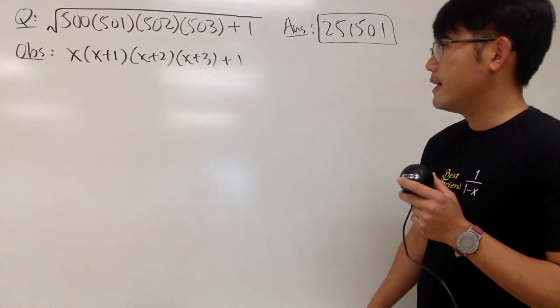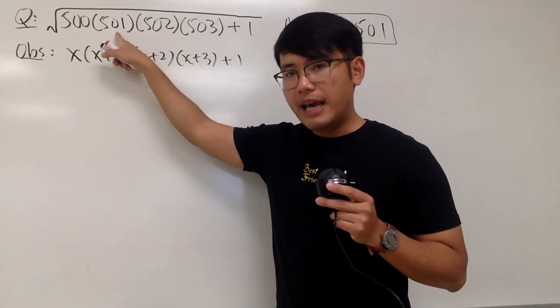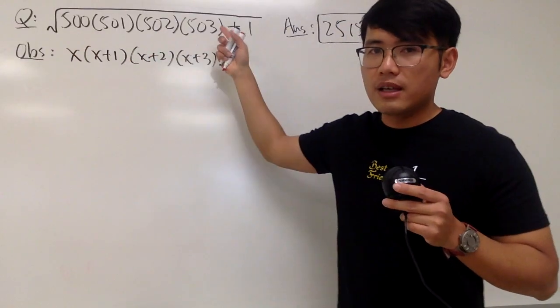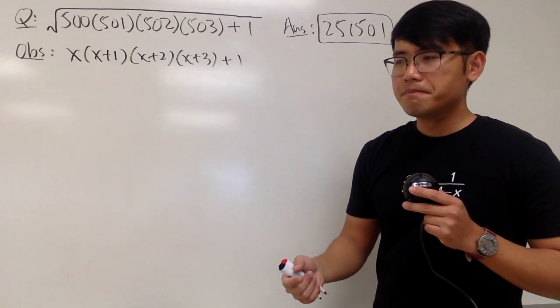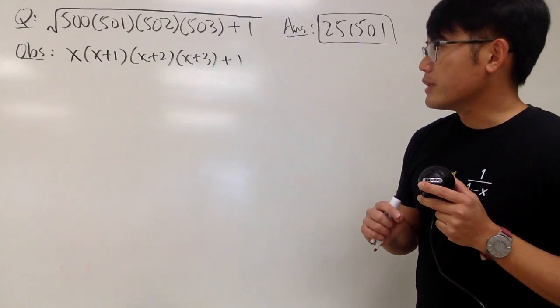Let's see. First of all though, you might be wondering, could we let this be x? So that this is x minus 1 and this is x plus 1 and x plus 2. Will that be easier? You can give it a try. I will continue from here, right?